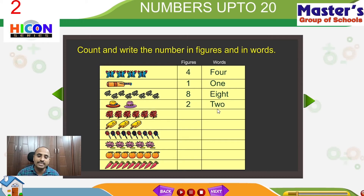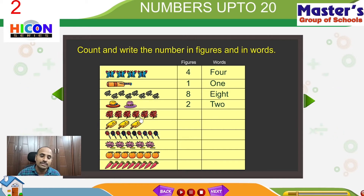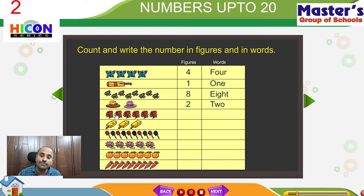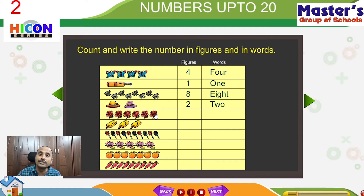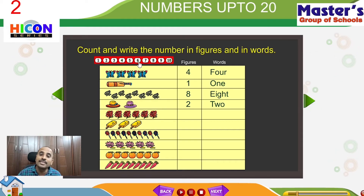See the next set of pictures. What are they? Roses. How many roses are there? Let us count: 1, 2, 3, 4, 5, 6. How many roses are there? Yes, there are 6 roses in the given picture. The answer is 6.